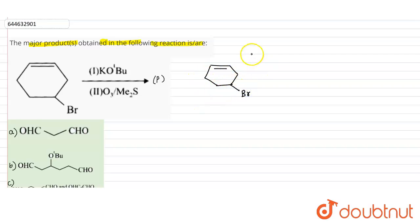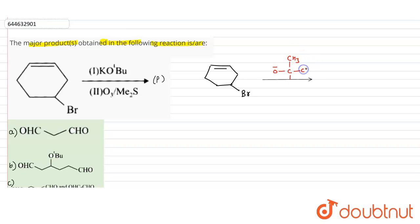This system is treated with tertiary butoxide. As we know, tertiary butoxide is a bulky base — it has three methyl groups — so it will attack where there is less steric hindrance.